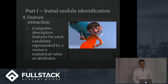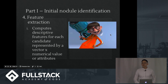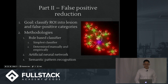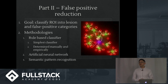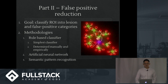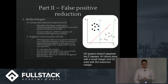We then employ feature extraction, which assigns a representative vector and numerical values of attributes. Finally, we get to the more interesting components: the false positive reduction aspects. There are many ways to go through this classification exercise — you can do everything from using a rule-based classifier to leveraging neural networks, semantic pattern recognition, linear discriminant analysis, and support vector machines.